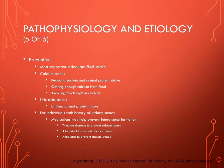Adequate fluid intake is the most important intervention for preventing all types of kidney stones. Calcium stones can be prevented by reducing sodium and animal proteins, getting enough calcium from food, and avoiding foods high in oxalates such as spinach, nuts, wheat, and bran. Uric acid stones can be prevented by limiting animal protein intake. For patients with a history of kidney stones, medications such as thiazide diuretics for calcium stones, allopurinol for uric acid stones, and antibiotics for struvite stones may help prevent recurrence.